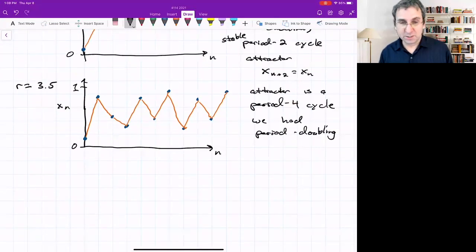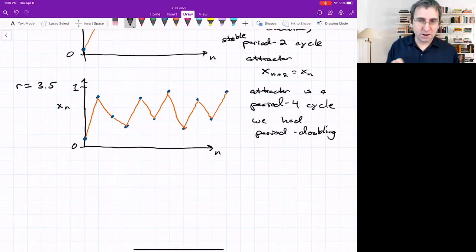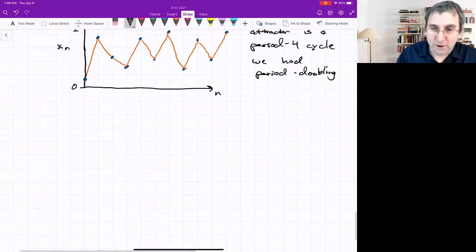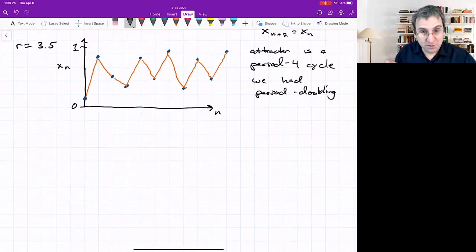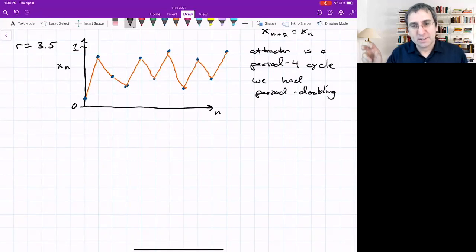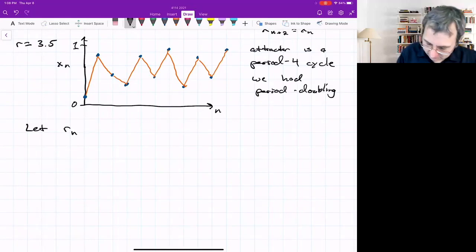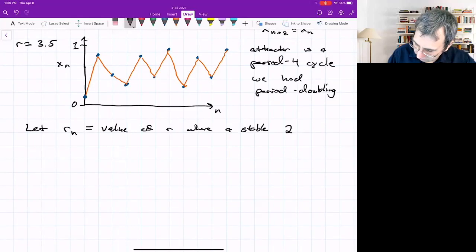You can find these numerically. Some you can find analytically. You tune r and look for the value where a stable 2^n cycle first occurs. As we turn this knob further, we go from period 4 to period 8, period 16, and so on. I'll call the special value of r, R_n, the value where a stable 2^n cycle first occurs.